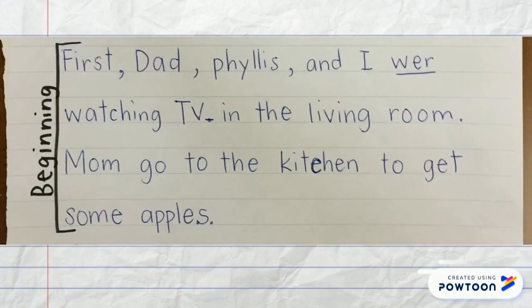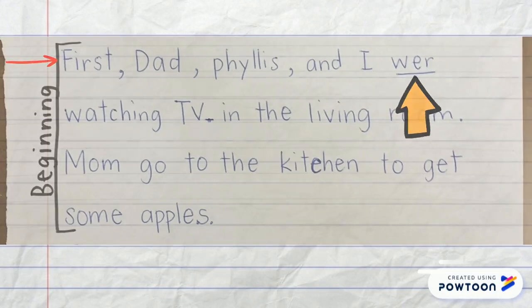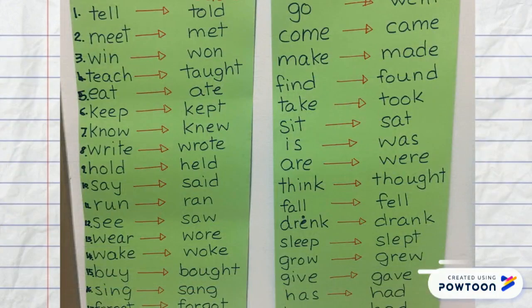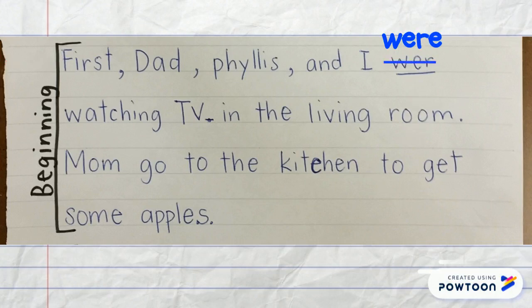This is part of my story from the last lesson. I am going to read it one sentence at a time and look for the verb. First, Dad, Phyllis, and I were watching TV in the living room. I know that the word were is the past tense verb, but I don't know how to spell it. I remember I saw this word earlier — let me find it. There it is. I'm going to fix the spelling by crossing it out and then write the correct spelling. Let me keep on reading.